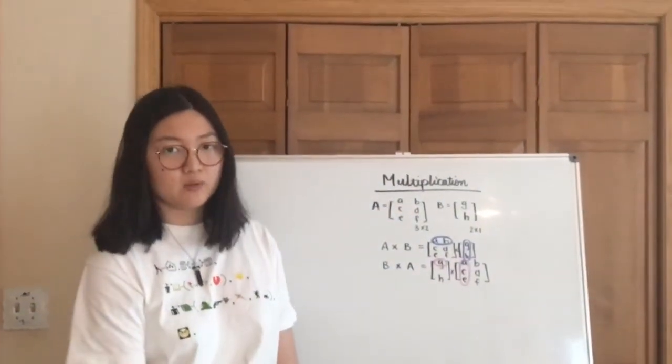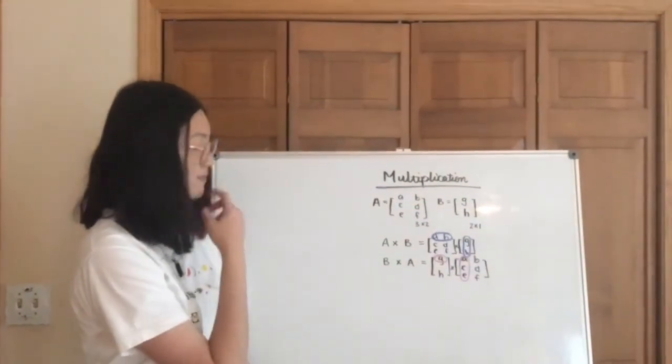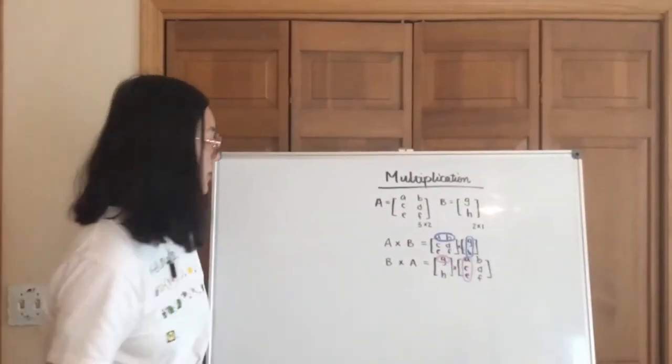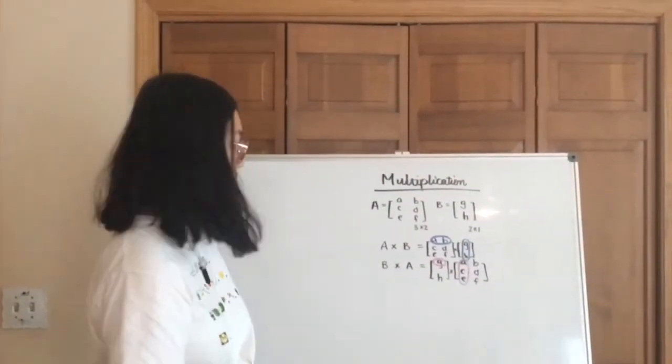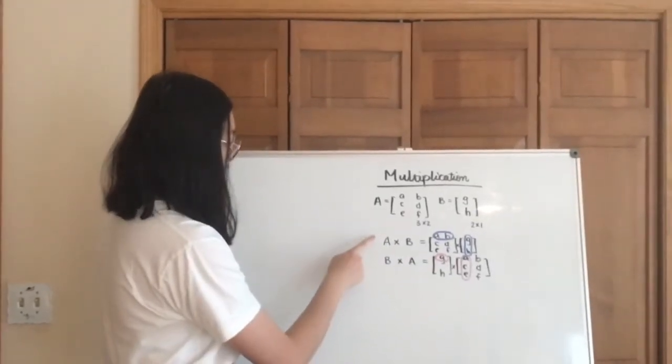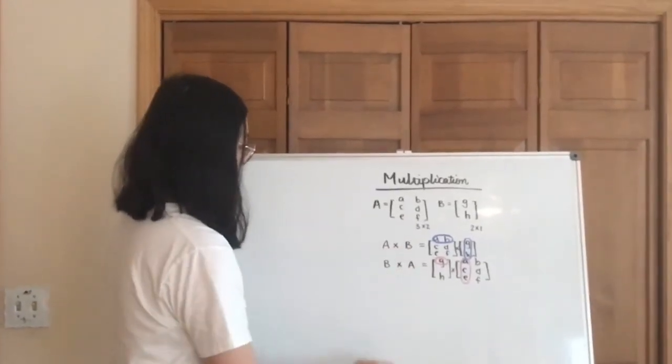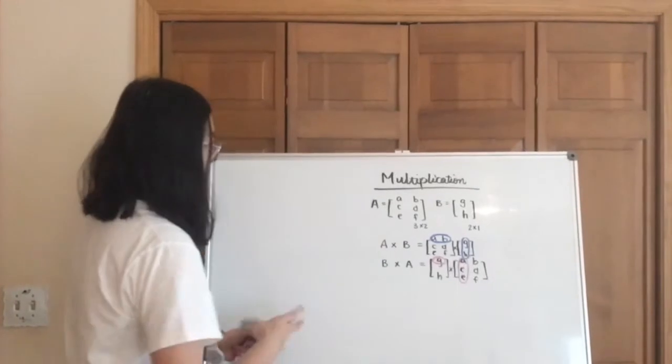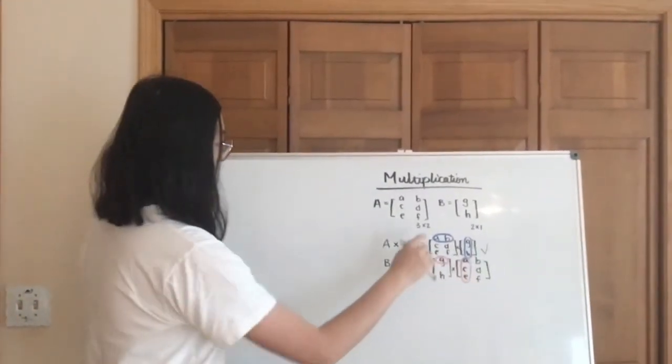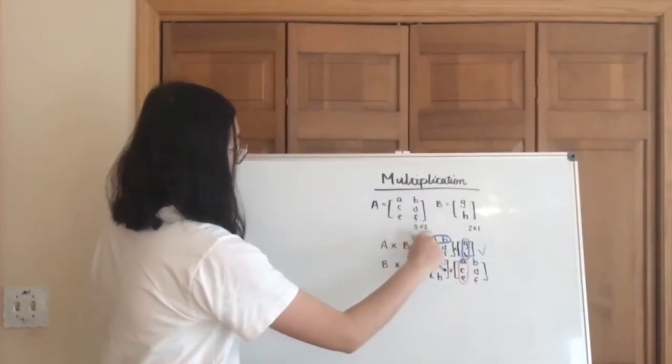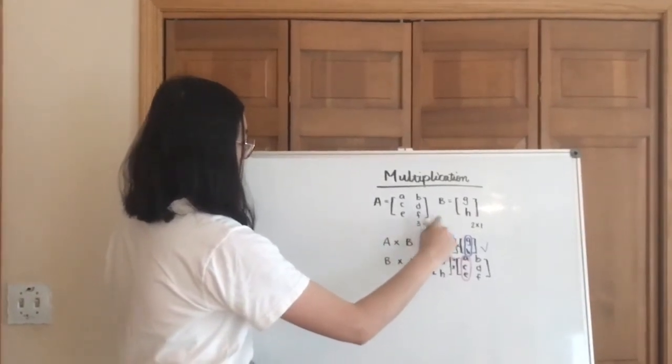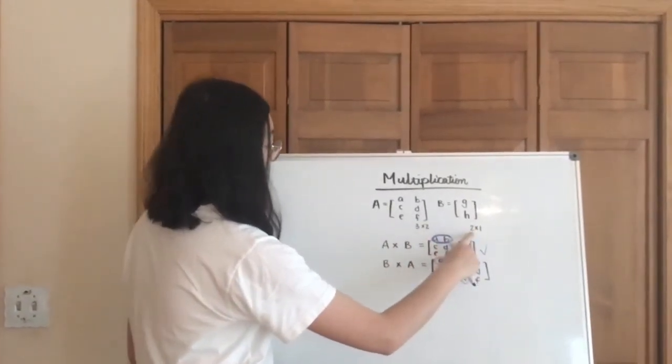One really important thing to know about matrix multiplication is that sometimes it cannot even happen. So the dimensions of the two matrices are very important. In the case here, for example, a multiplied by b, that is a valid action. And you can get something out of it because the number of columns in a is the same as the number of rows in b.